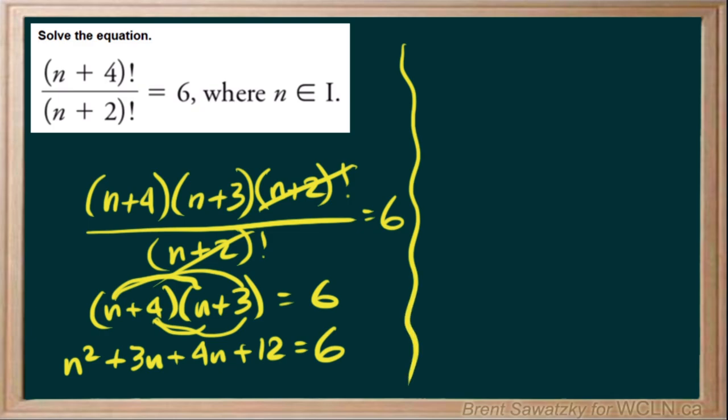And we'll just divide our work a little bit because we have more to do. So now let's bring this up: n squared. We can bring the 3n and 4n together, so we have 7n. And our 12 and our 6. So remember we mentioned earlier that we want a 0 on the right-hand side here. We're solving. And remember our methods for solving.